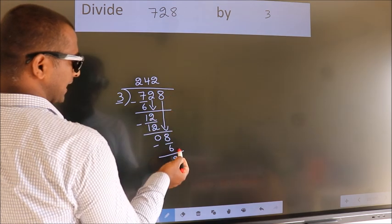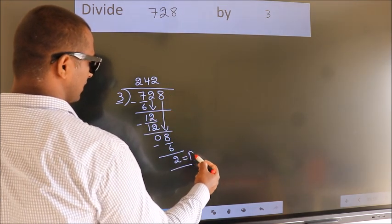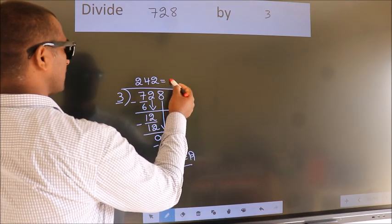No more numbers to bring it down. So, we stop here. This is our remainder. This is our quotient.